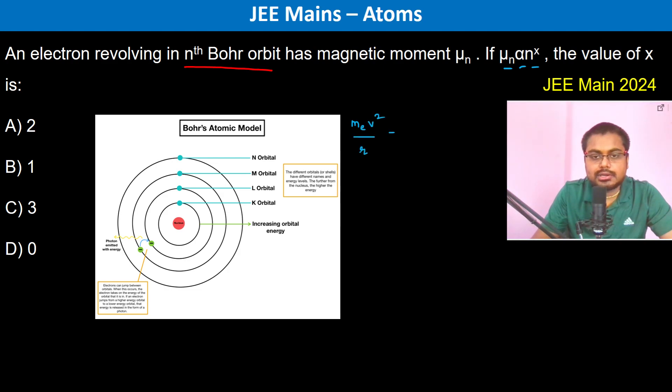divided by r is equal to kq squared divided by r squared. So r cancels, therefore it becomes mev squared is equal to ke squared divided by r. This is one thing.